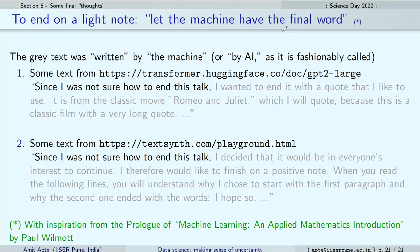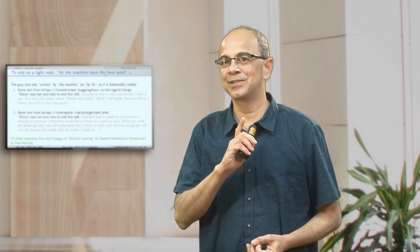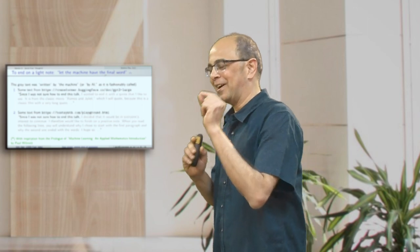On a light note, these days a machine can write text. I gave a phrase — since I was not sure how to end this talk — and the gray text you see was produced by two different websites with AI behind them. You decide whether this is artificial intelligence or not. I would not have written any of that gray text for sure. With that, thanks a lot for your attention. This is an open invitation for all of you to come to IISER, talk to us, interact with us, maybe study with us, or join us as researchers.